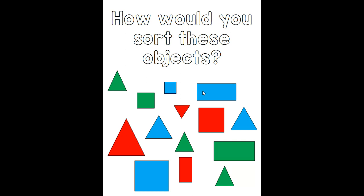Now that you've had a chance to talk with a grown-up, I'm going to talk about some different ways that you could sort these objects. One of the ways would be by color — so we could put the red shapes together, the green shapes together, and then all the blue shapes together. Another way would be to sort them by shape — you could put all the squares together, then the triangles together, and then the rectangles together.